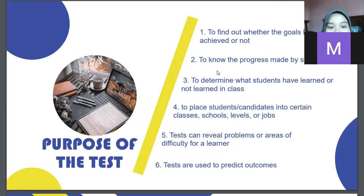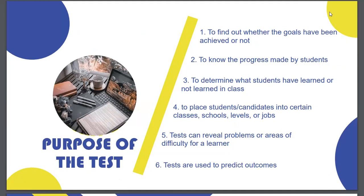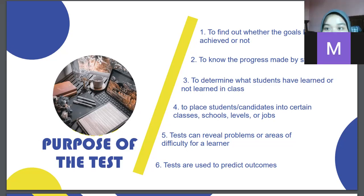There are six purposes of the test. First is to find out whether the goals have been achieved or not — to measure the performance of a candidate in a course, lesson, or topic, and to tell the teacher or course developer whether the objective has been achieved. Second is to know the progress made by students — to know whether or not the students are improving. If progress is met, we reinforce it so students can learn more.